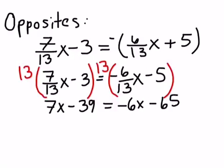And then we'll move variables to one side, so let's add 6x, and move the constants to the right side, so add 39 to both sides.